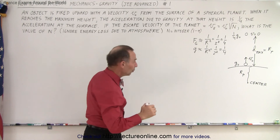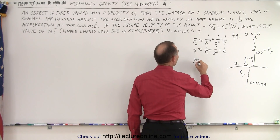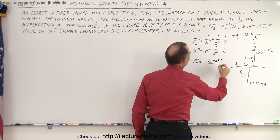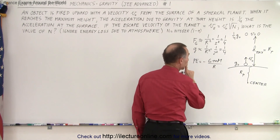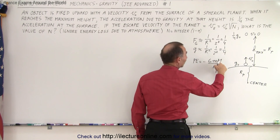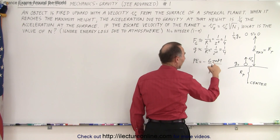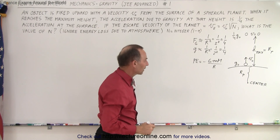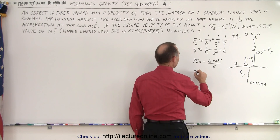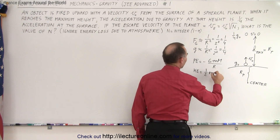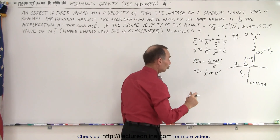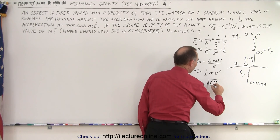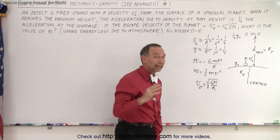We also need some equations. The gravitational potential energy at any location is equal to minus G times little m times big M over r. The kinetic energy is always equal to one-half m v squared. And the orbital velocity v-sub-o is equal to the square root of GM over r. All those may play a role in solving this problem.